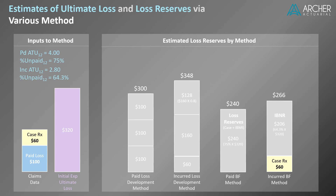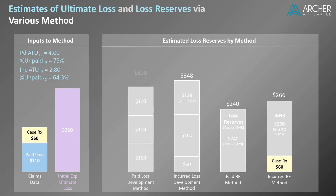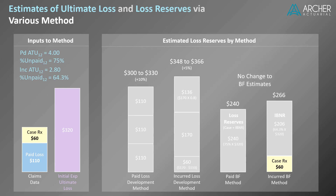Next, we're going to take a look at how a hypothetical increase in paid loss from $100 to $110 affects each of the four loss reserve estimates. Estimated loss reserves via the paid loss development method would increase from $300 to $330, or a 10% increase. Estimated loss reserves via the incurred loss development method would increase from $348 to $366, about a 5% increase. You may be surprised to learn that the hypothetical increase in paid loss costs would have no effect on the loss reserve estimates via the BF methods.